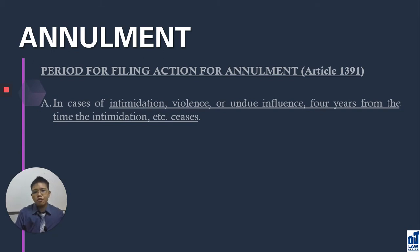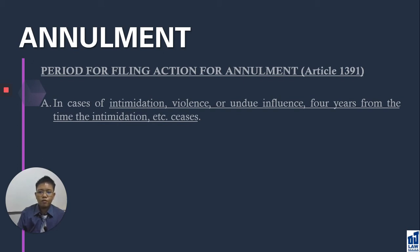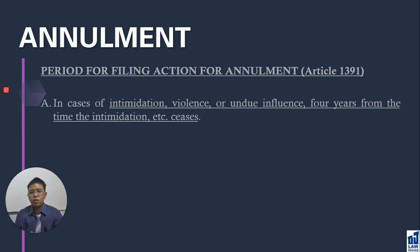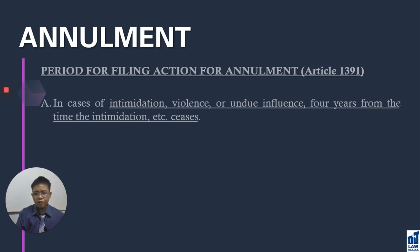In cases of intimidation, violence, or undue influence, start counting the 4 years from the time the intimidation, violence, or undue influence ceases. Wait until it stops — when the threats stop, when the violence stops, when the undue influence stops — that is when you begin counting the 4 years. Because before that, the consent is not yet free.